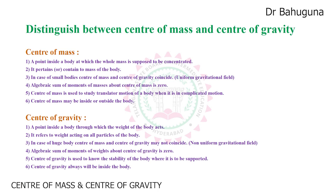In non-uniform gravitational fields, they are not coinciding. Fourth point: the algebraic sum of moments of the masses about the center of mass is zero. The algebraic sum of moments of weights about the center of gravity is also zero.